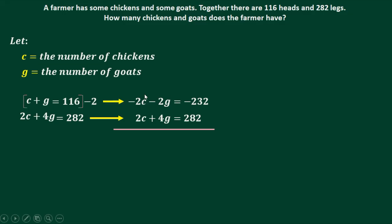Notice that negative 2C and positive 2C cancel out — take note, you cannot eliminate terms if they have the same sign; they must be opposite in sign. Adding the G terms: negative 2G plus 4G gives 2G. Adding the constants: negative 232 plus 282 gives 50. Dividing by 2, G equals 25 goats.